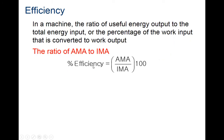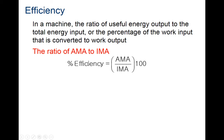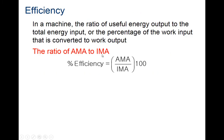We can calculate the efficiency of our machine by taking our actual mechanical advantage, which was 2, and dividing it by our ideal mechanical advantage, which was 2.44.